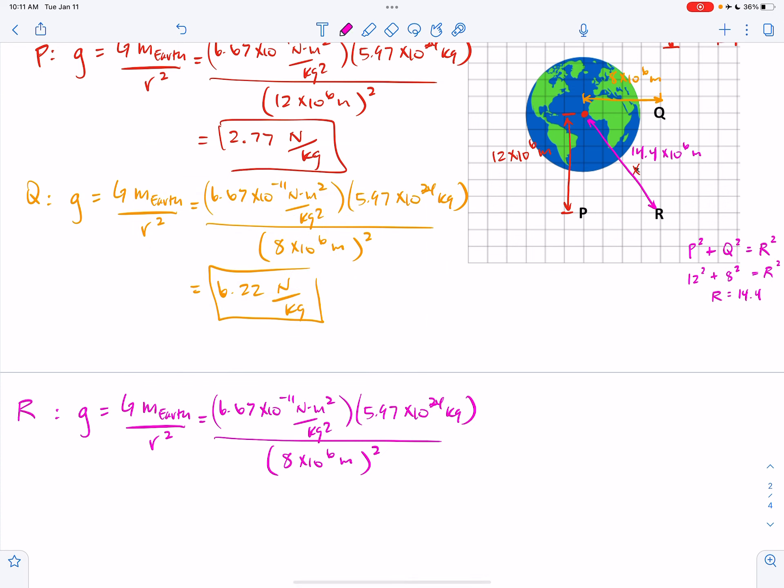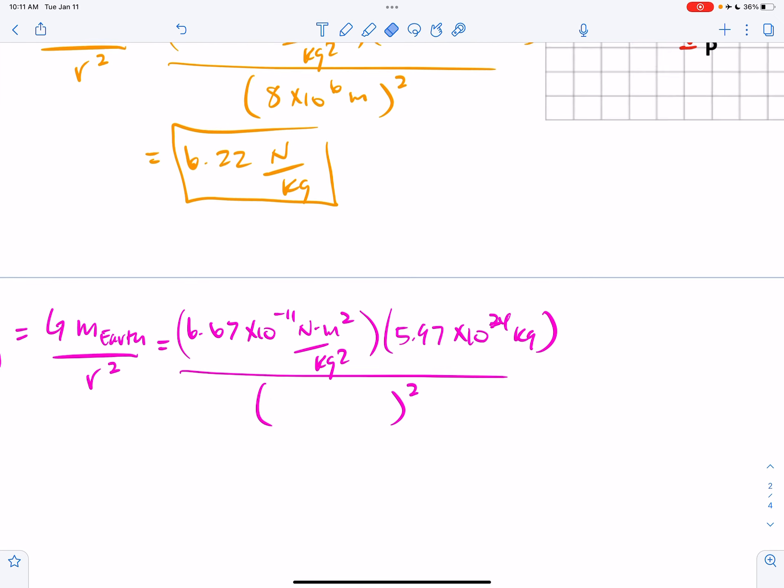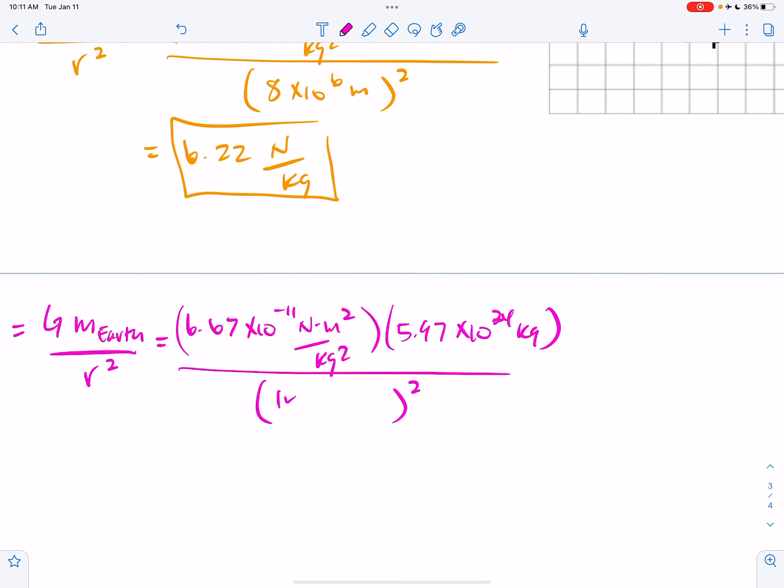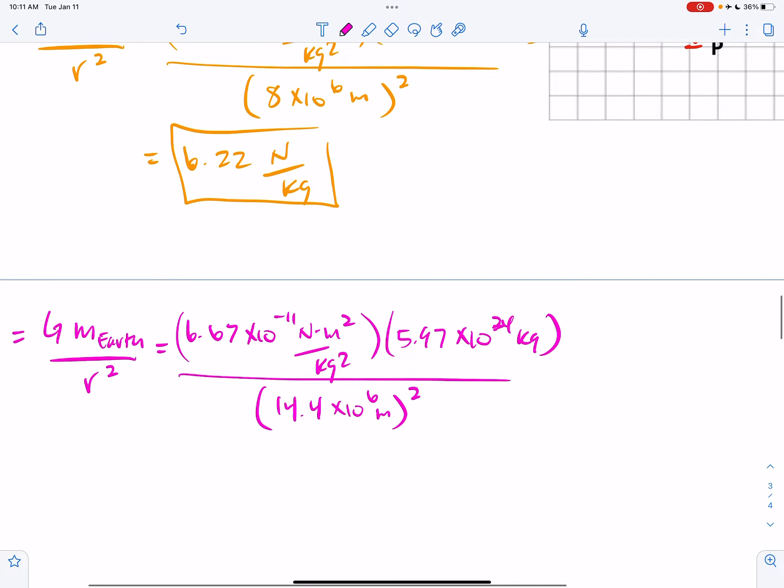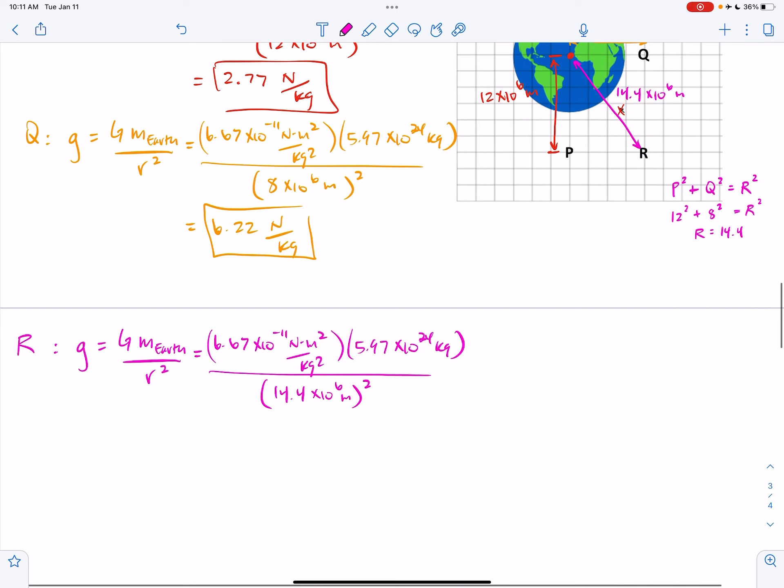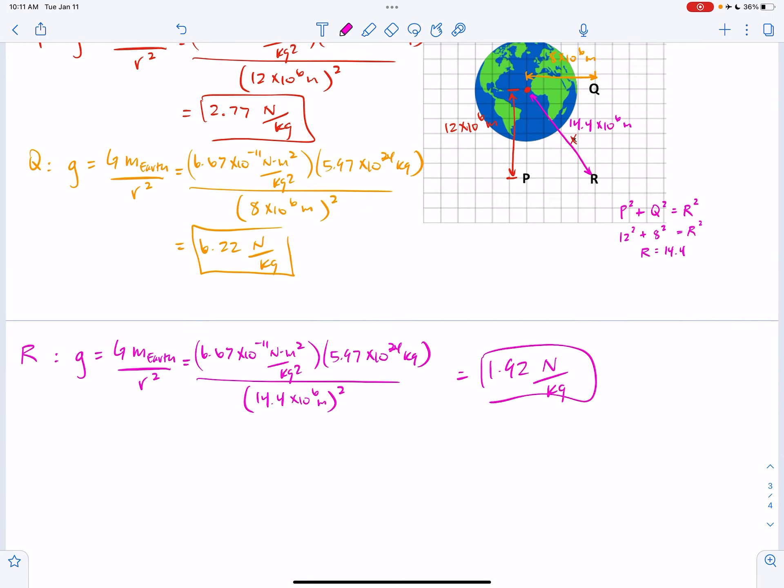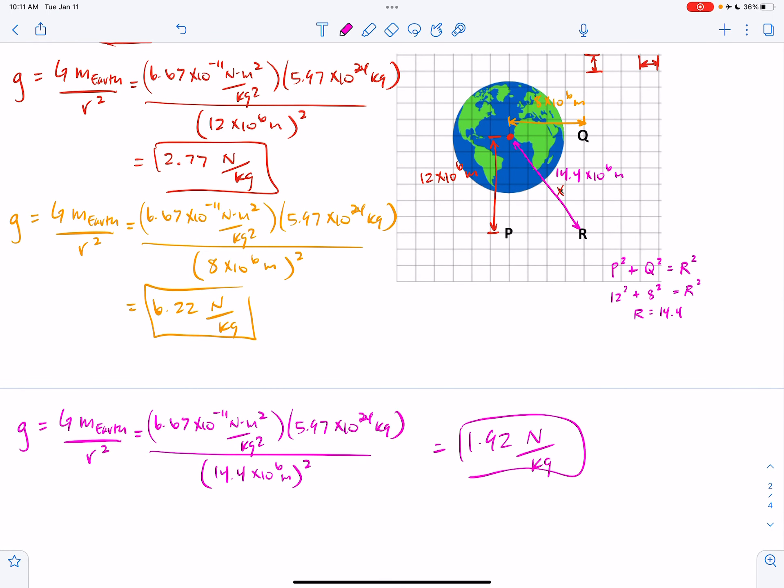Alright, to R, we're going to change the distance down here on the bottom. So this is 14.4 times 10 to the 6th meters. And so if I do the calculator work, I get 1.92 newtons per kilogram. Notice that's the weakest of all, weakest of all fields because R is the farthest away from the center of the Earth.